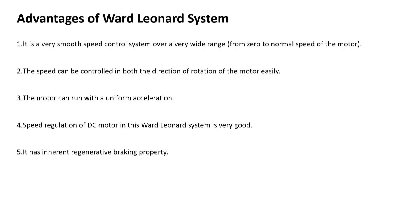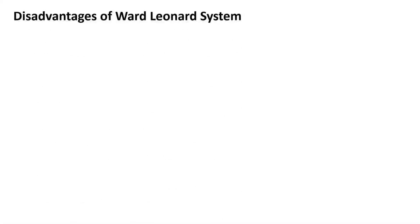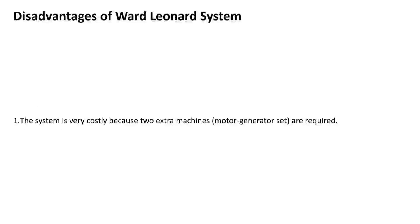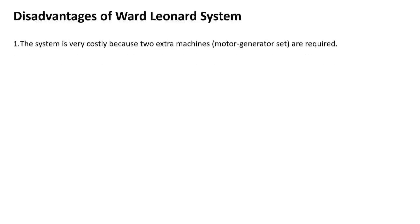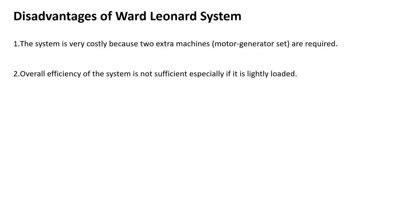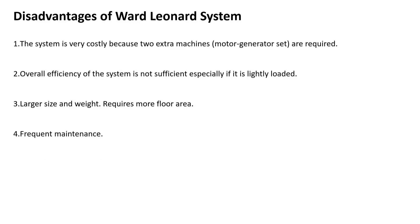The disadvantages of the Ward Leonard method are: the overall efficiency of the system is not sufficient, especially at light load; large floor space is required because of the large motors; it is costly because two extra motors — that is, a motor and generator — are required; frequent maintenance is needed; and it produces more noise.